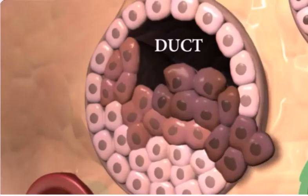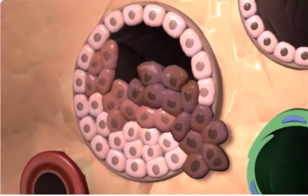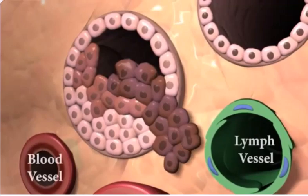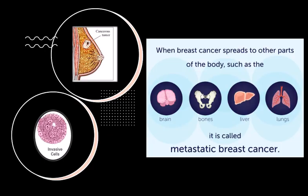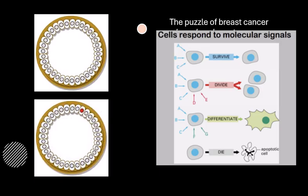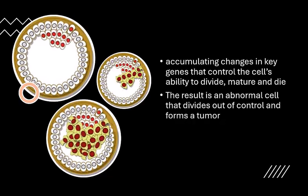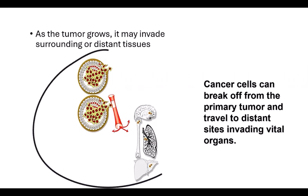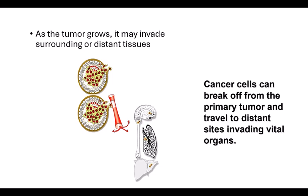Characteristics of cancer include unrestricted or unregulated growth. Cancer growth is invasive — the cancer cells invade other structures, tissues, or organs, and often disrupt their function. Cancer spreads or metastasizes throughout the body. The growth rate of cancer may be faster or slower than that of normal cells. Cancer cells are often not completely formed or immature. Breast cancer occurs as a result of accumulating changes in key genes that control a cell's ability to divide, mature, and die. If the cancer has grown beyond where it started, it is called invasive. Most cancers are invasive. Sometimes cancer cells can spread to other parts of the body through the blood or lymph system — the cancer is then called metastatic.